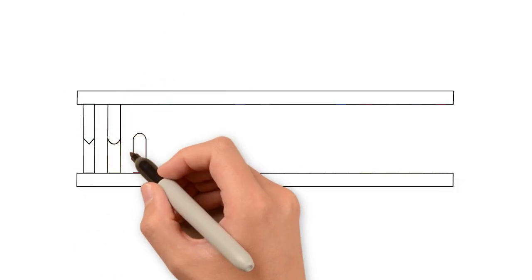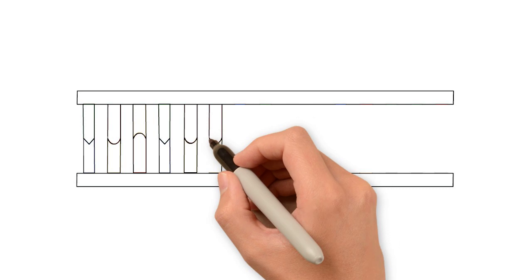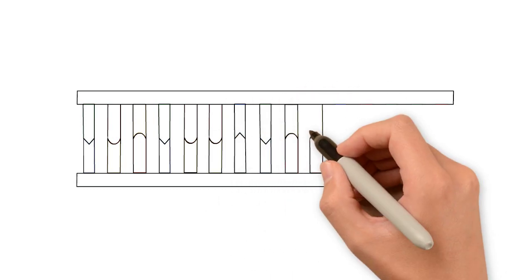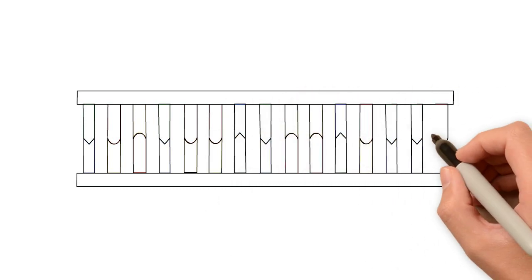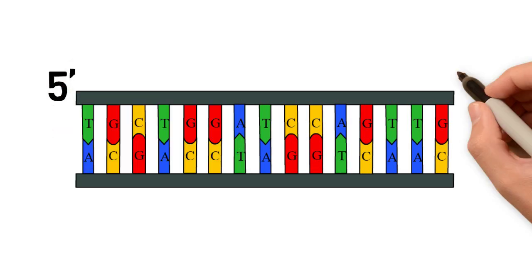Moreover, the DNA strands have an orientation. The normal orientation of most biological processes is usually called 5' to 3'.